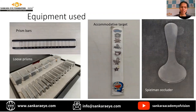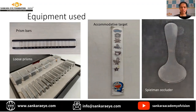We can either use the prism bars, which have vertically oriented prisms and horizontally oriented prisms, or we can use loose prisms. The occluders that we use are again of two types: they can either be opaque occluders or translucent occluders like the Peelman's occluder.